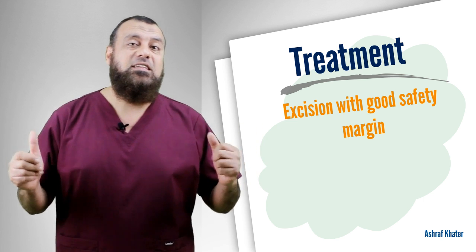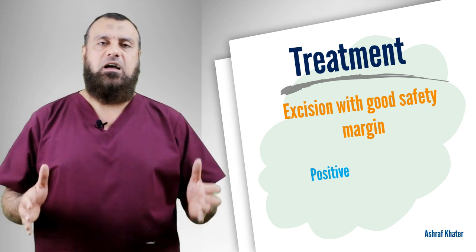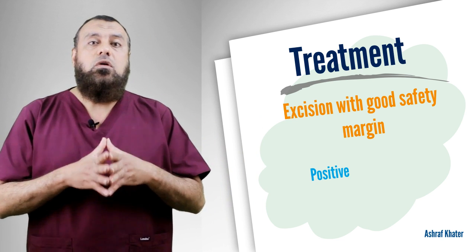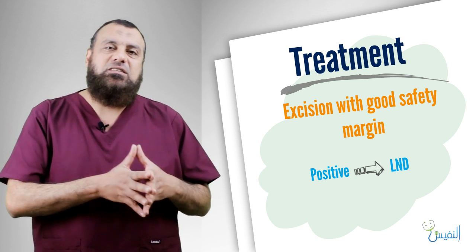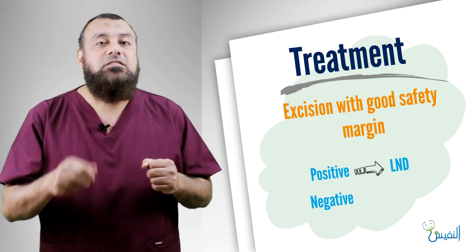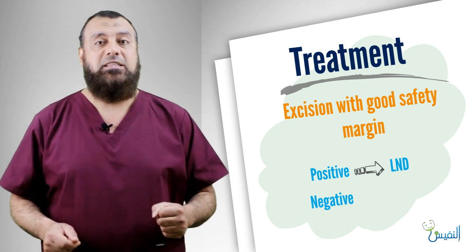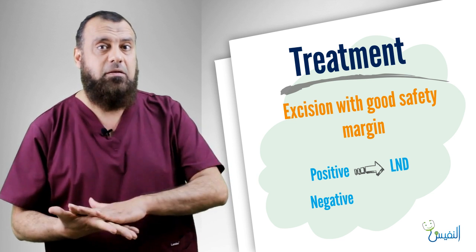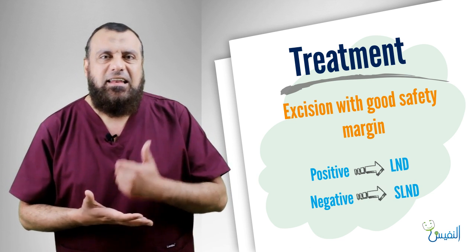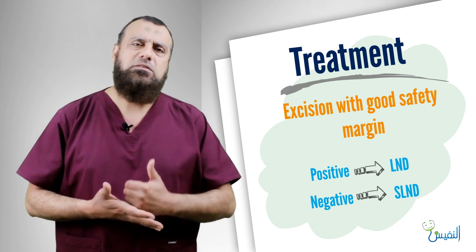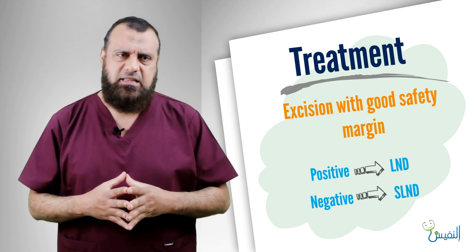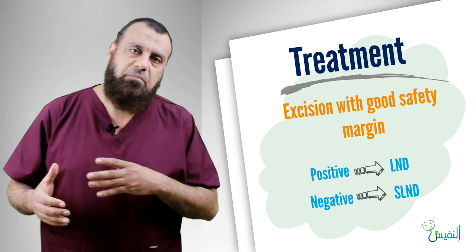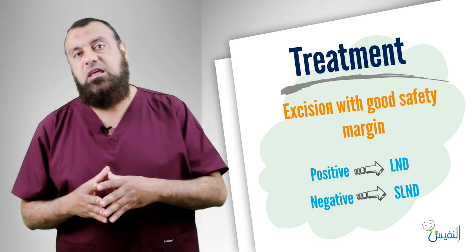Regarding lymph node metastasis: if it is positive, either clinically or by ultrasonography, I must do lymph node dissection. If it is negative, there is a 30% possibility of occult metastasis, especially if the depth is more than 4 mm. In that case, I must do what we call a sentinel lymph node biopsy — a technique we will discuss later. In advanced cases, we may use palliative treatment or palliative chemoradiotherapy.